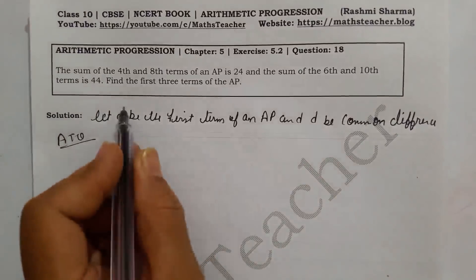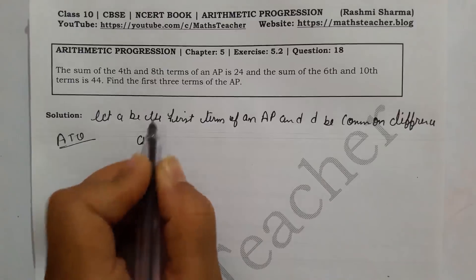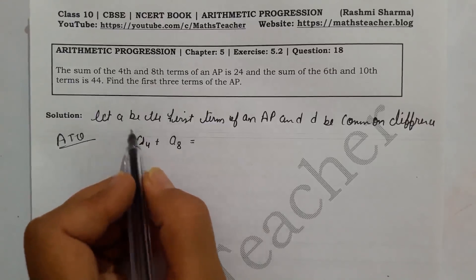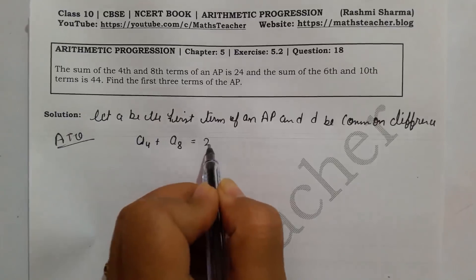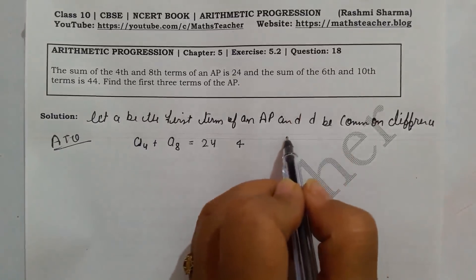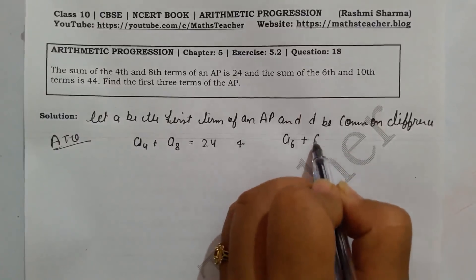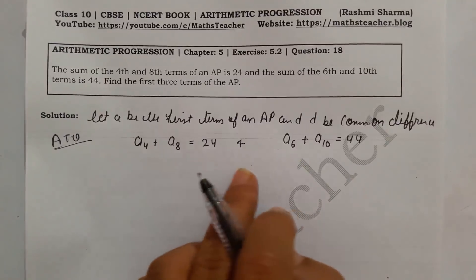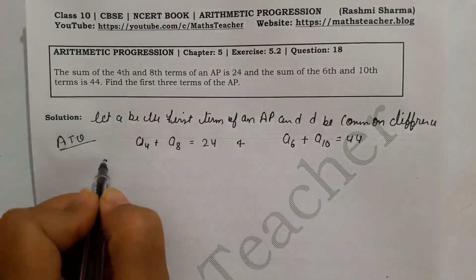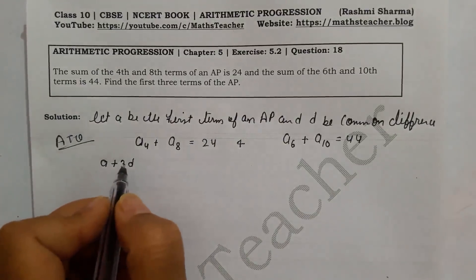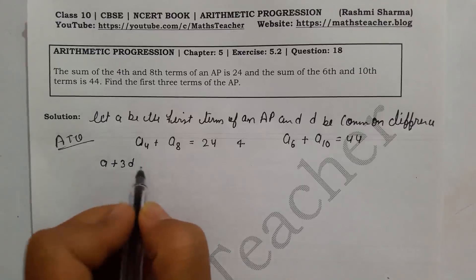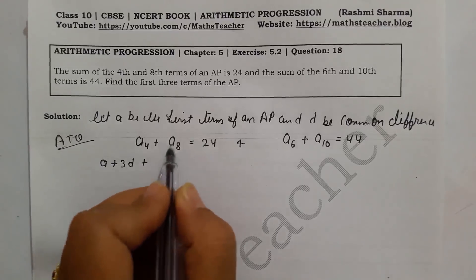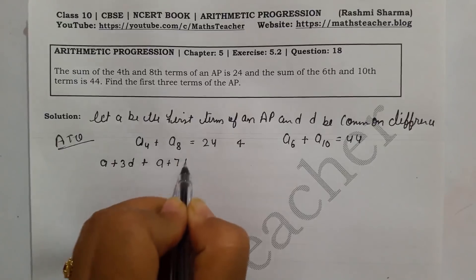According to the question, the conditions given are: the fourth term a₄ and eighth term a₈ sum to 24, which is our first condition. The second condition is that the sixth term a₆ and tenth term a₁₀ sum to 44. We will write these as two equations and solve. The fourth term is a+3d and the eighth term is a+7d.